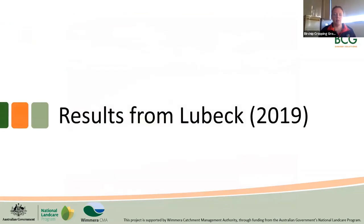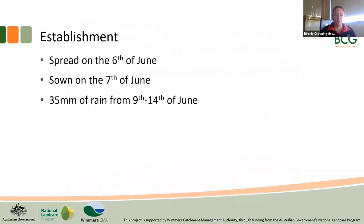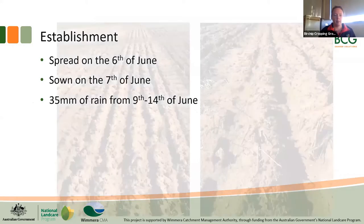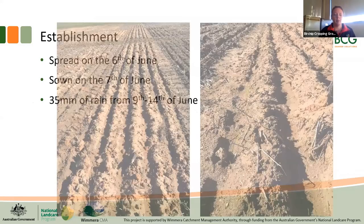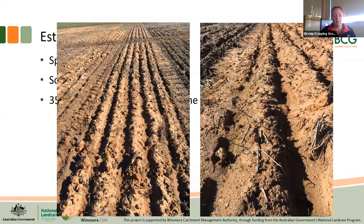Moving on to the results we saw in 2019: we struggled a lot with establishment at this site. We spread the amendments on the 6th of June, sowed on the 7th of June, and then the following week received 35mm of rain. This resulted in the clay plots' furrows slumping back over, which really damaged our establishment.